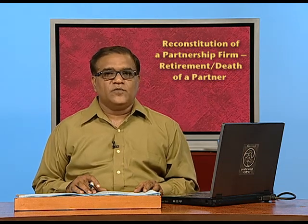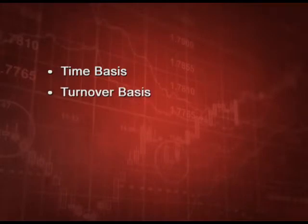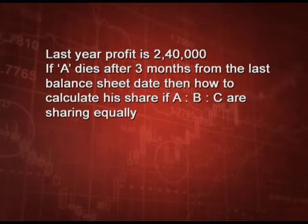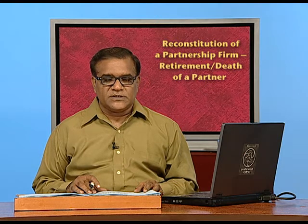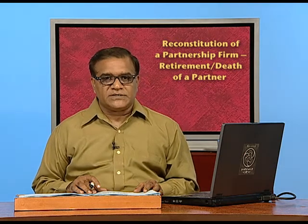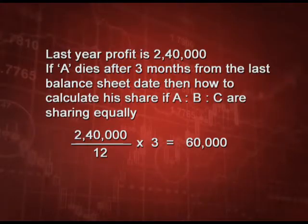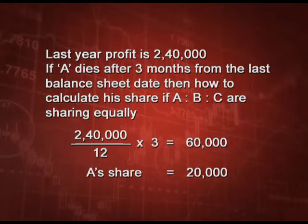There are two bases for calculating profits till the date of death: time basis and turnover basis. For time basis, take an example: last year profit is 2,40,000. If A dies after 3 months from the last balance sheet date, we calculate 2,40,000 divided by 12 multiplied by 3, giving 60,000 rupees. A's share, as equal partners, is one-third of 60,000, that is 20,000 rupees.